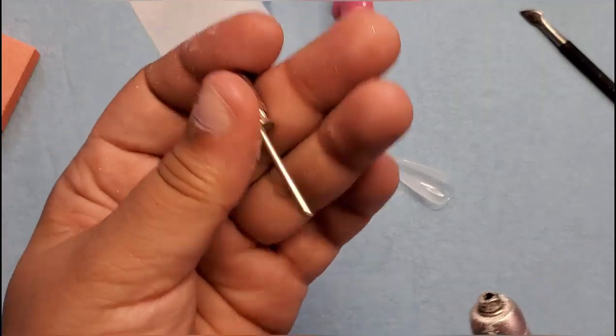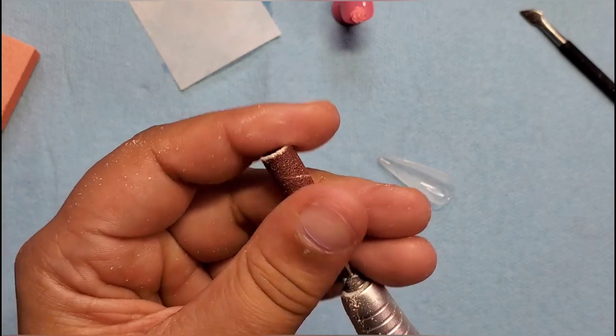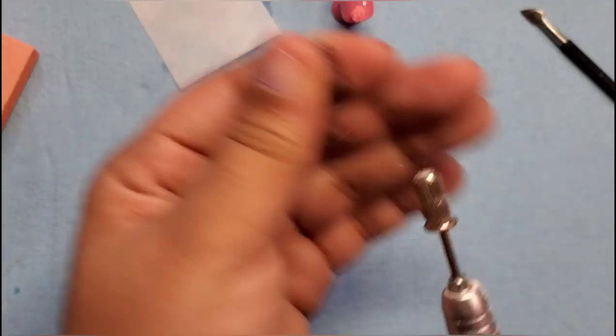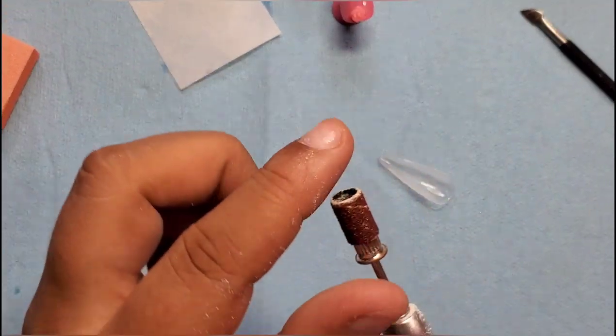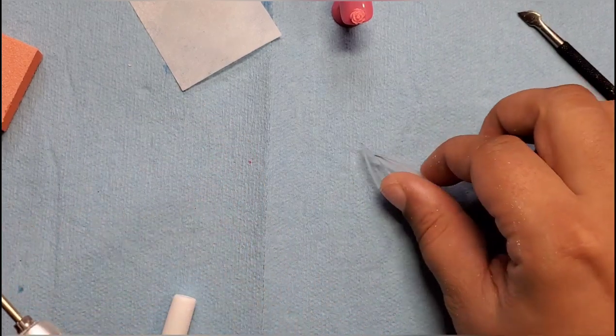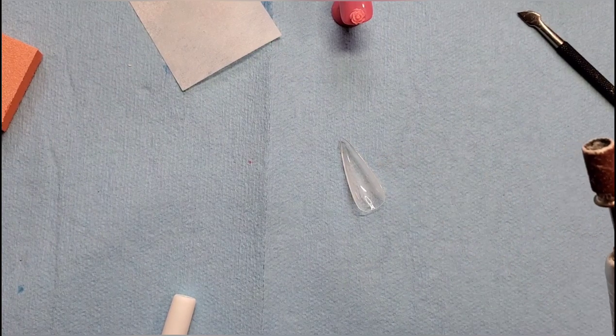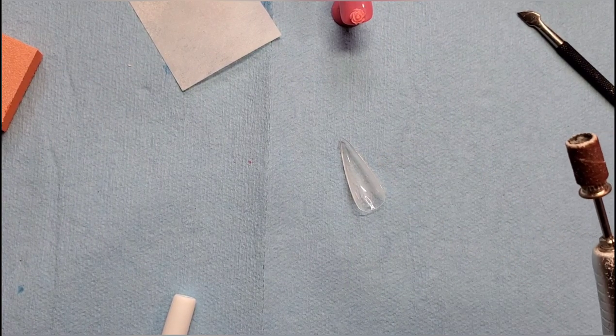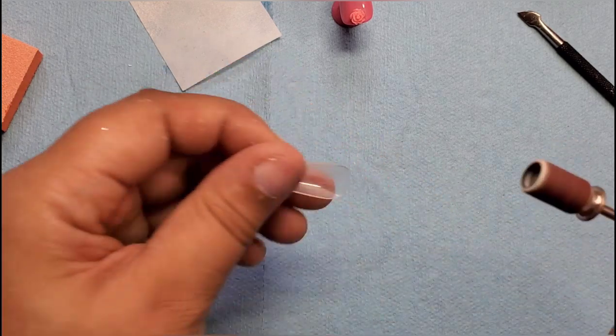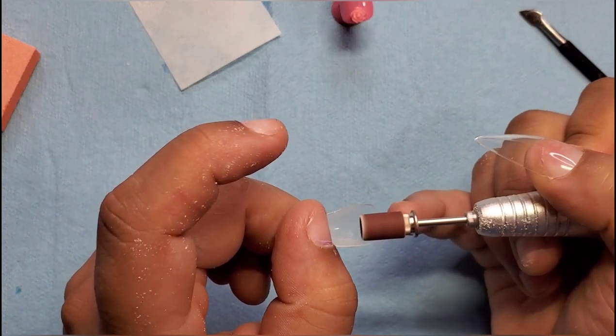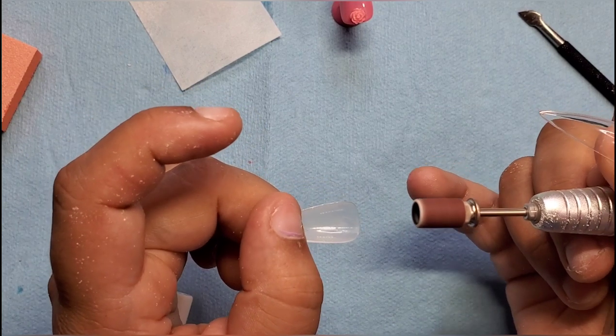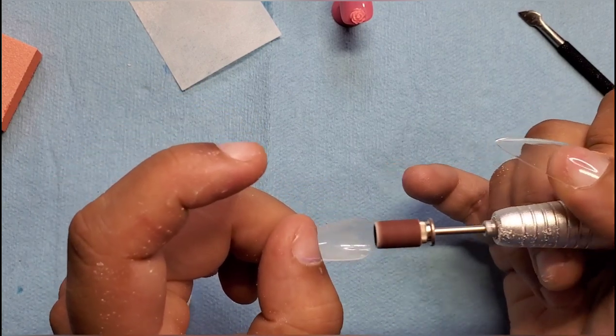You could use the drill bit that has the sanding band, I think it's like the mandrel bit. Since this is going inside the nail, it doesn't matter about the grit. You could literally take this and gently buff out the glue.